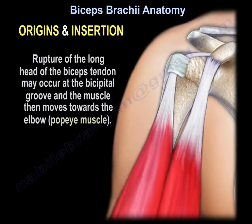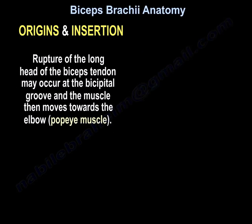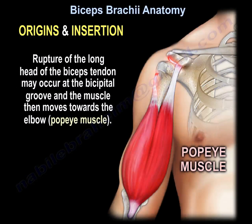Rupture of the long head of the biceps tendon may occur at the bicipital groove, and the muscle then moves towards the elbow. This is called a BAPI muscle deformity.